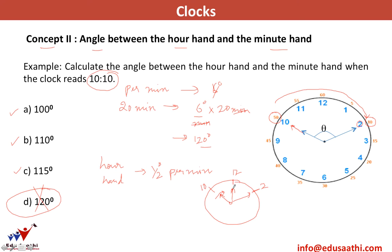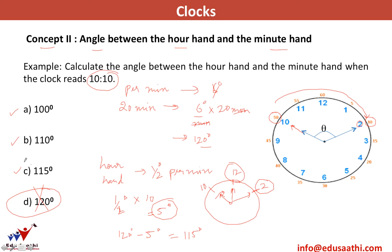In 10 minutes, as the minute hand moves from 12 to 2, the hour hand moves 0.5 × 10 = 5 degrees. So the minute hand covers 120 degrees and the hour hand covers 5 degrees in the same direction. Using relative distance: 120 − 5 = 115 degrees. This is the concept, but there is a very easy formula on the next slide that gives this 115-degree answer directly. If the conceptual method is hard to follow, just memorize that formula.